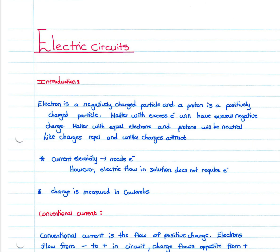An electron is a negatively charged particle, and a proton is a positively charged particle. Matter with excess electrons will have an overall negative charge, and matter with equal electrons and protons will be neutral. Like charges repel and unlike charges attract.